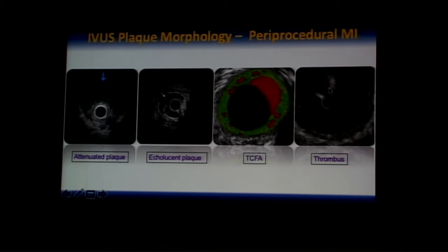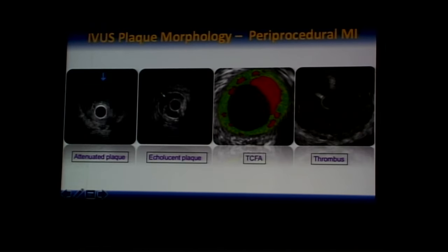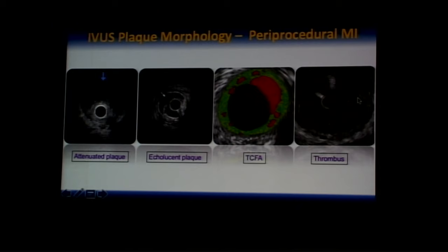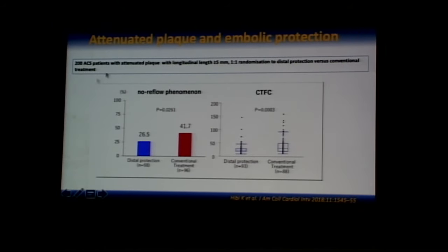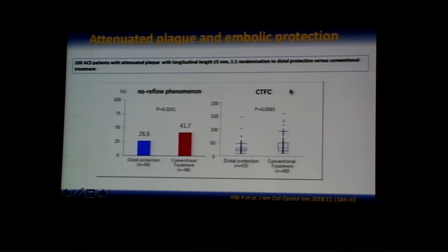IVUS assessment of plaque morphology and its relation to peri-procedural MI: different IVUS morphologies are associated with no-reflow. The first is attenuated plaque — intra-plaque attenuation in the absence of calcified plaque. The second is intra-plaque echolucency. The third is virtual histology thin-cap fibroatheroma. The fourth is presence of thrombus. A Japanese study of 200 ACS patients showed that attenuated plaque length ≥5 mm, with distal protection using a filter, is associated with lower no-reflow incidence and improved TIMI frame count.